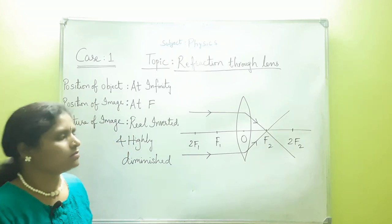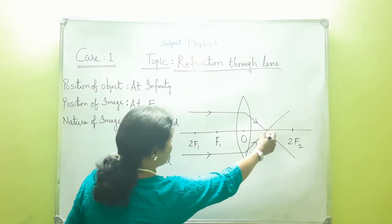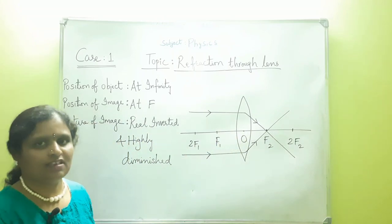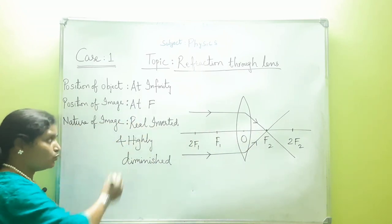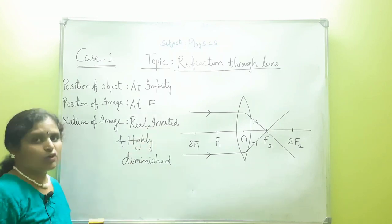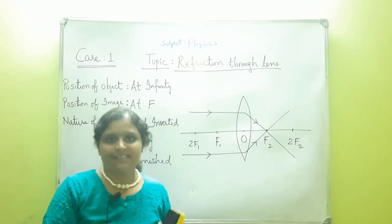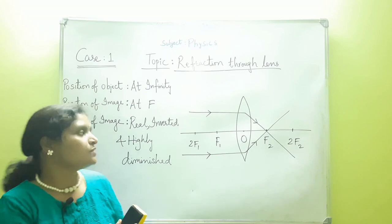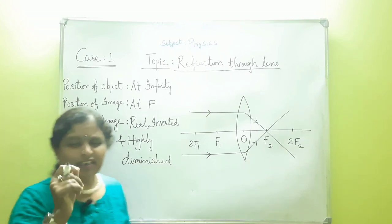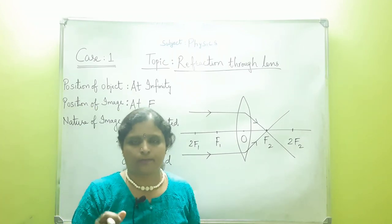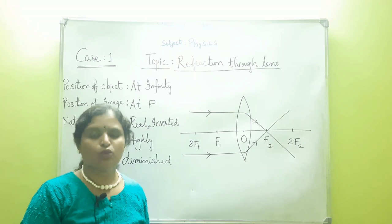That is how case 1 is clear. Whenever an object is placed at infinity, the image is formed at the focus. The refracted rays meet at the focus where the image is formed, and the nature of the image is real and inverted, because the convex lens is a converging lens and the rays actually converge at a point. At the same time the image is highly diminished — a very point image is formed.